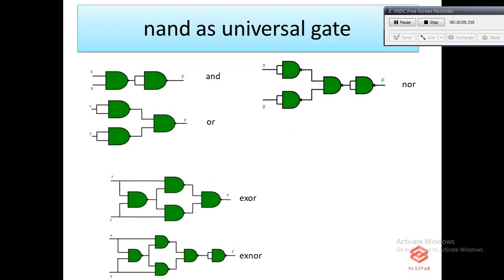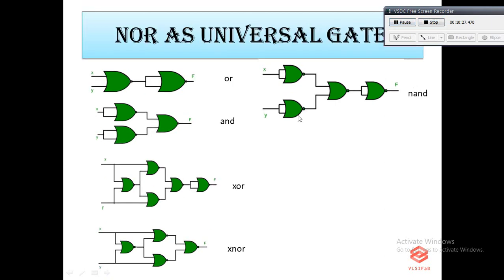As already mentioned, NAND gates are called universal gates. These diagrams show how we can build any gate using NAND gates — AND gate, OR gate, XOR, XNOR, and NOR gates are all built from NAND gates. Similarly, NOR is also a universal gate, and you can see how we can build all gates — AND, OR, XOR, XNOR, and NAND — using only NOR gates.